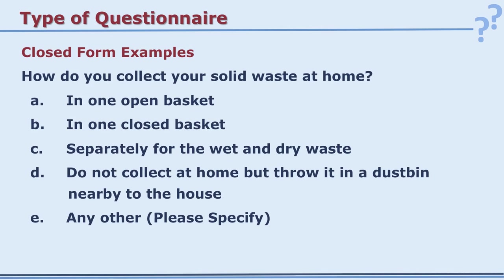Here is an example of closed form: 'How do you collect your solid waste at home?' Five alternatives are given: in one open basket, in one closed basket, separately for wet and dry waste, throw it in a nearby dustbin, or any other — please specify. The 'any other' option provides for alternatives you may not have thought of. The respondent is supposed to tick one.